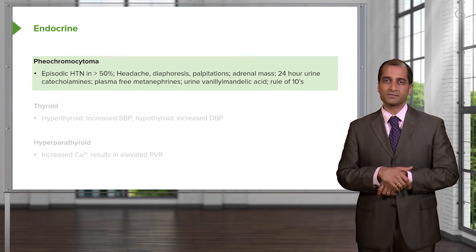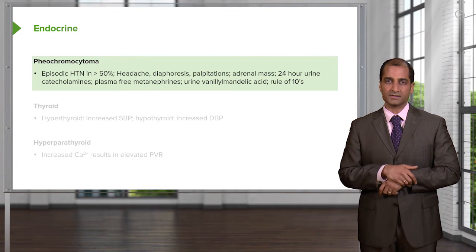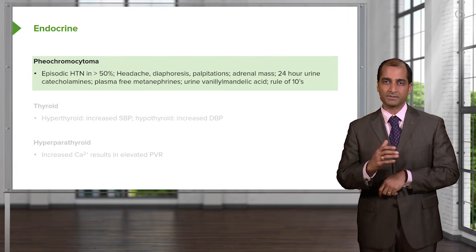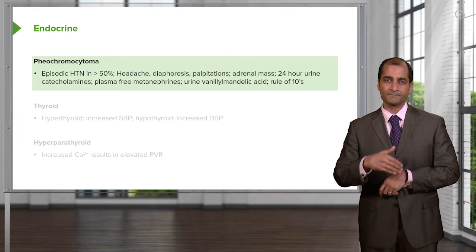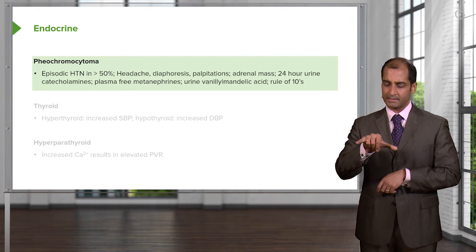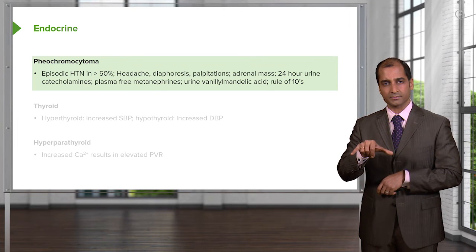Remember the rule of tens for pheochromocytoma: 10% of the time it might be sporadic, 10% of the time familial, and 10% of the time both kidneys may be affected.